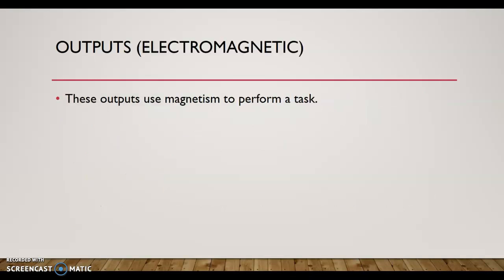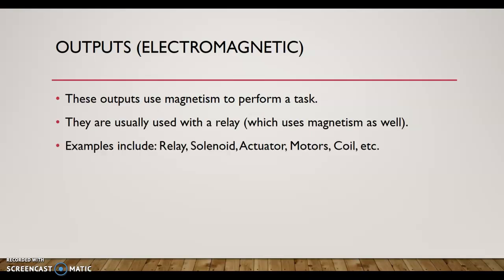Outputs electromagnetic—these kinds of outputs use magnetism to perform a task. They are usually used with a relay, which uses magnetism as well. Examples include the relay, a solenoid, actuator, motors, coil, etc. All of these devices use current and coils to build an electromagnetic field to perform a task, whether it's a relay to close a switch, a solenoid to move a plunger, an actuator to move a door, motors to move like a radiator fan to cool something, a coil like an ignition coil, shift solenoids for transmissions—all of these circuits use current to create a magnetic field to operate a mechanical device.